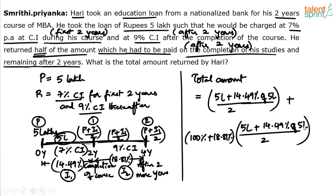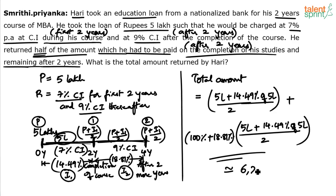Do the calculation — the concept is important, and if options are given, you can do an approximate calculation. For example, 14.49 can be taken as approximately 14.5%. So 14.5% of 5 lakhs: 10% of 5 lakhs is 50,000; 4.5% of 5 lakhs is 22,500; total is 72,500. So the first payment is (5 lakhs + 72,500) / 2. On that same value, take 118.81%. When you do the full calculation, the final answer comes out to approximately 6 lakhs 26,288.